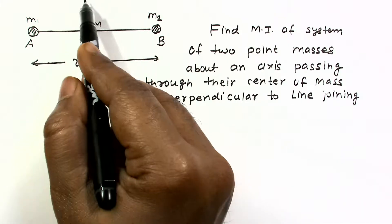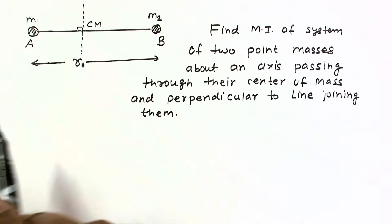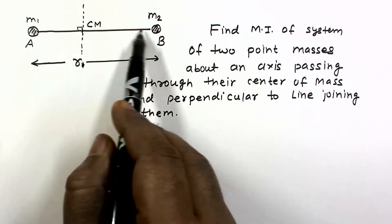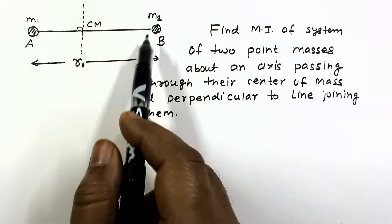So we have to find the moment of inertia about this axis. This axis is passing through their center of mass and perpendicular to the line joining them. Distance between the particles is given as R.